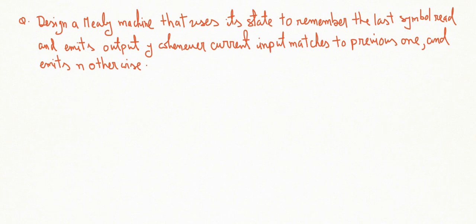Welcome to the next video on finite automata. In this video we are going to see some examples of Mealy machines. The question is: design a Mealy machine that uses its state to remember the last symbol read and emits output Y whenever the current input matches the previous one and emits N otherwise.